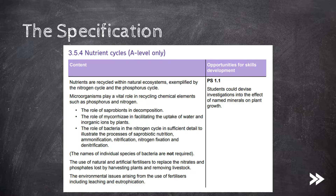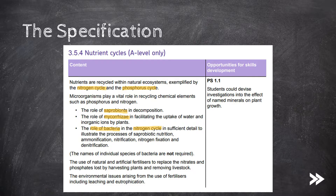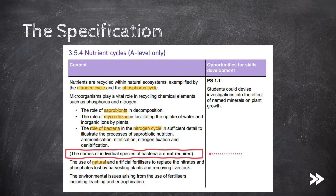Nutrients are recycled within natural ecosystems, and examples of this include the nitrogen and phosphorus cycles, which are the two cycles we need to know about. The specification wants us to know about the role of saprobionts in decomposition, as well as how mycorrhizae help plants with the uptake of water and inorganic ions. We should also know the role of bacteria in the nitrogen cycle to illustrate saprobiotic nutrition, ammonification, nitrification, nitrogen fixation and denitrification. Note that you don't need to know the names of individual species of bacteria. We will then finish by covering natural and artificial fertilisers, as well as environmental issues arising from the use of fertilisers, including leaching and eutrophication.